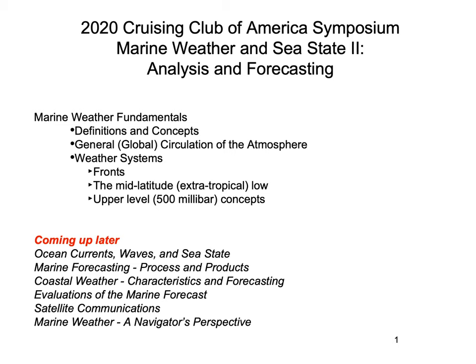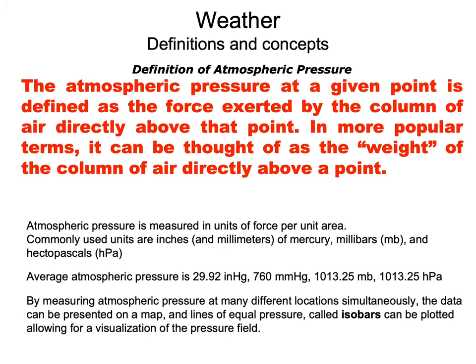Frank talked about Admiral Fitzroy. Definition of atmospheric pressure: everybody has a barometer on board, right? Pressure at a given point is defined as the force exerted by the column of air directly above that point. One of the things we want to impress is that the atmosphere is three-dimensional. We live at the surface and it seems like we're looking at north, south, east, west — two-dimensional — but in reality the fluid extends toward outer space, and that slice of fluid above a given point has mass. That mass, because of gravity, exerts a force we call atmospheric pressure.